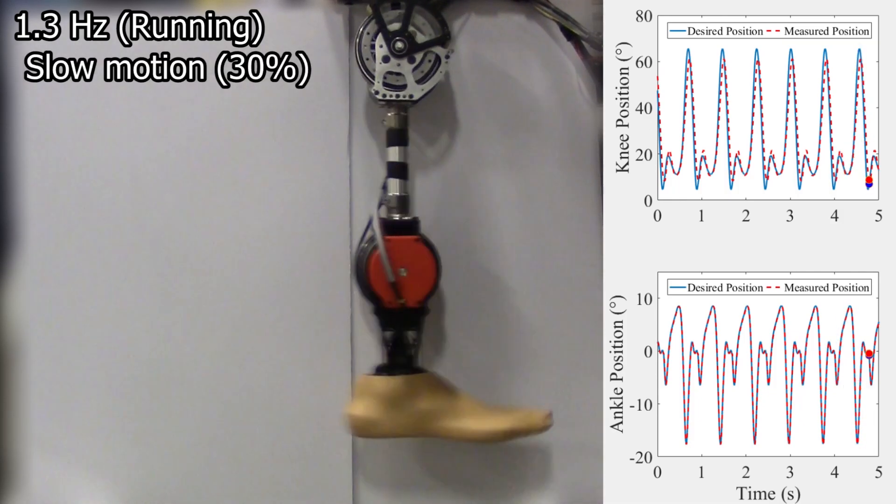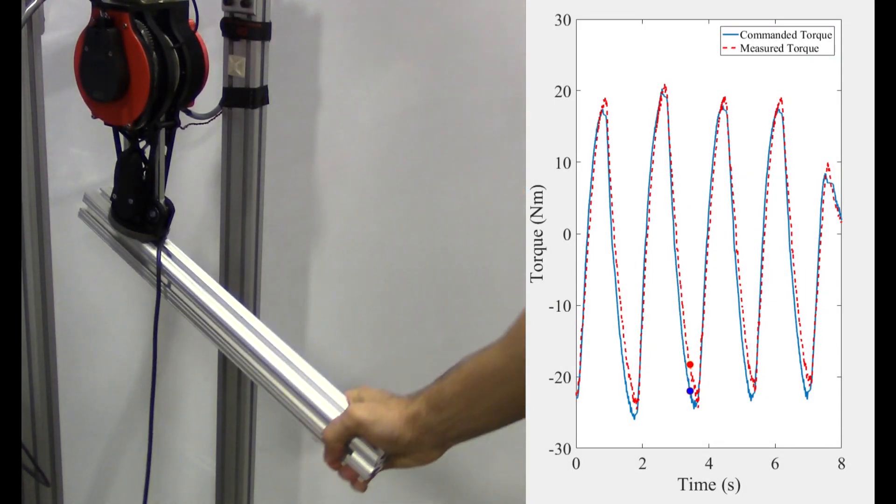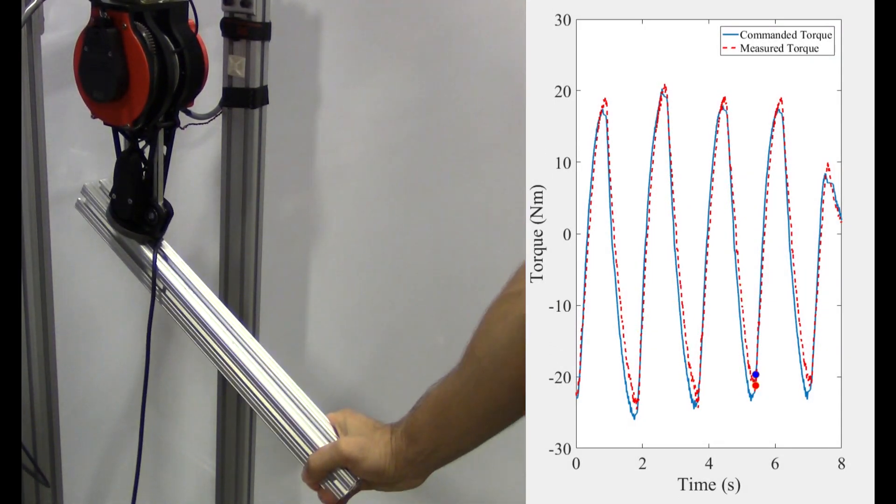Furthermore, benchtop and walking experiments revealed that the intrinsic impedance and unmodeled dynamics of the actuator are sufficiently small to control joint impedance without torque sensor feedback.